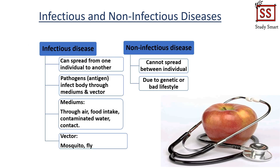There are two types of disease: infectious disease and non-infectious disease. Infectious disease refers to the disease that can spread from one person to another, while non-infectious disease refers to the disease that cannot spread between one individual to another individual.